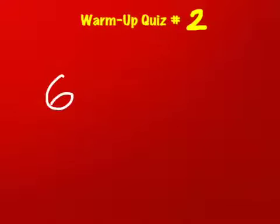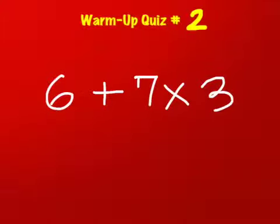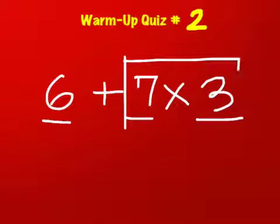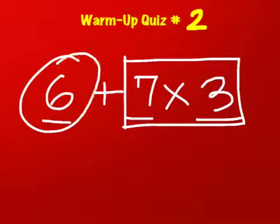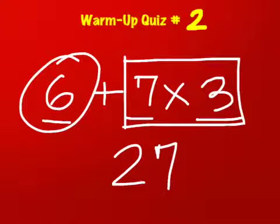Here's another one. 6+7×3. For this, it's important to remember that if you do 6+7, which is 13, and multiply it by 3, you'll get 39, which is wrong. You have to do 7×3, which is 21, then plus 6, which is 27. That's important to remember.